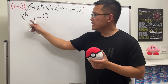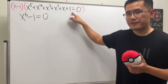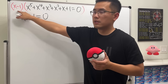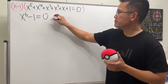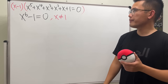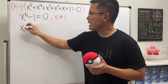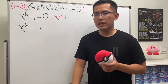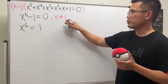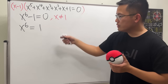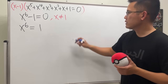This new equation has six solutions, but our original only has five, because we multiplied in an extra factor. So we must note that x cannot equal one. We now just need to solve x to the sixth power equals one — finding all the sixth roots of one — but we will not count x equals one as a solution.